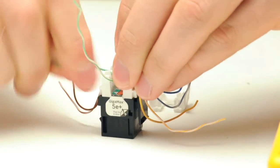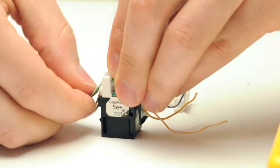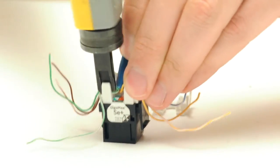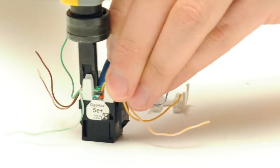For most applications, choose the 568B color code. Take your punch down tool and firmly insert the conductors all the way into the IDC connector.